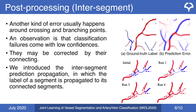Another kind of error usually happens around crossing and branching points. An observation is that classification failures come with low confidence scores and may be corrected by their connected segments. We introduce inter-segment prediction propagation, in which the label of a segment is propagated to its connected segments. Sequential propagation leads to correct predictions, as shown in this example.